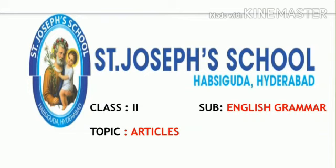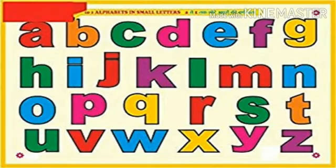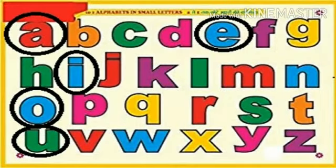How many letters are there in the English alphabet? Yes, there are 26 letters in the English alphabet, that is from A to Z. Can you read out the circled letters? Yes — A, E, I, O, U.